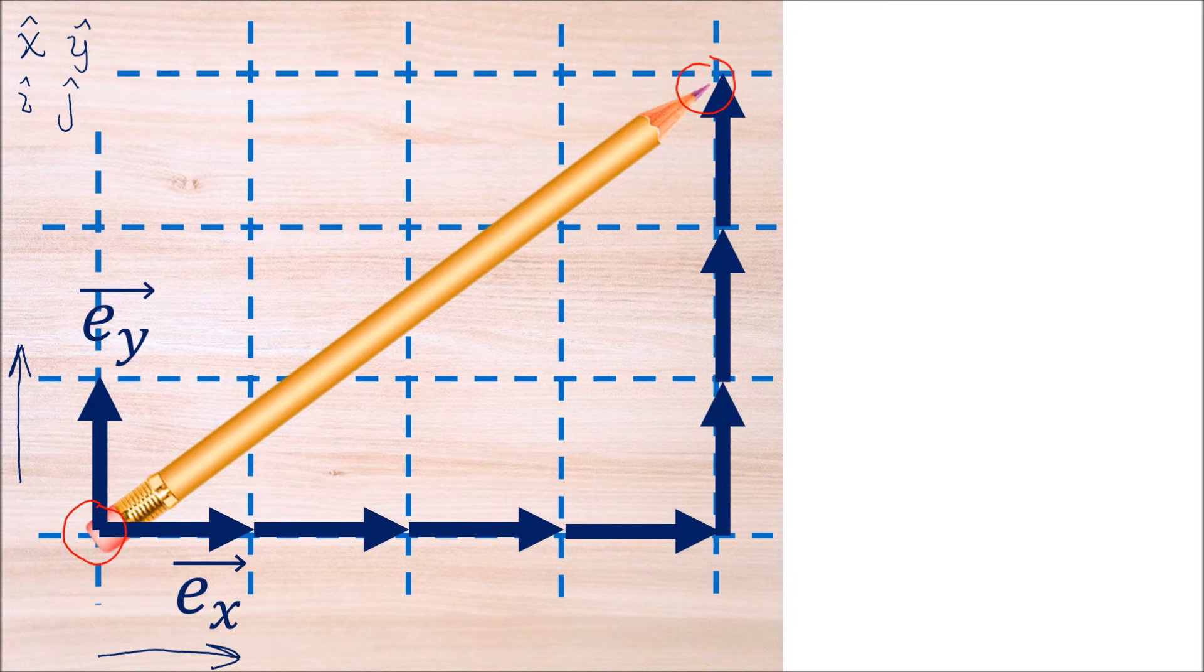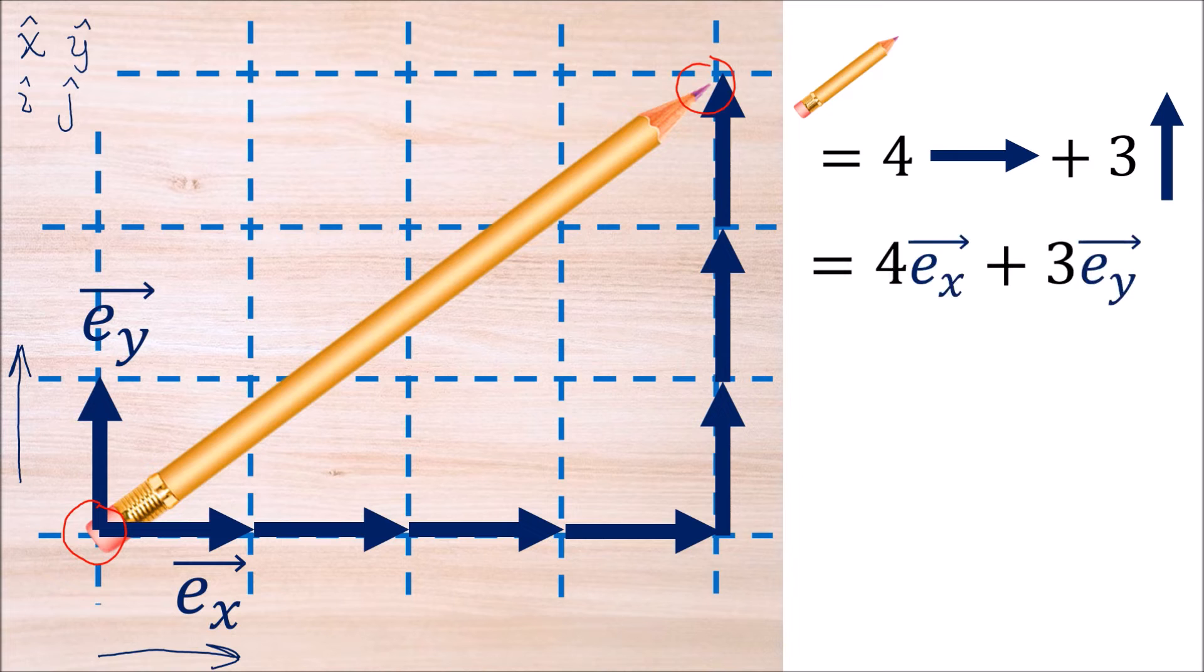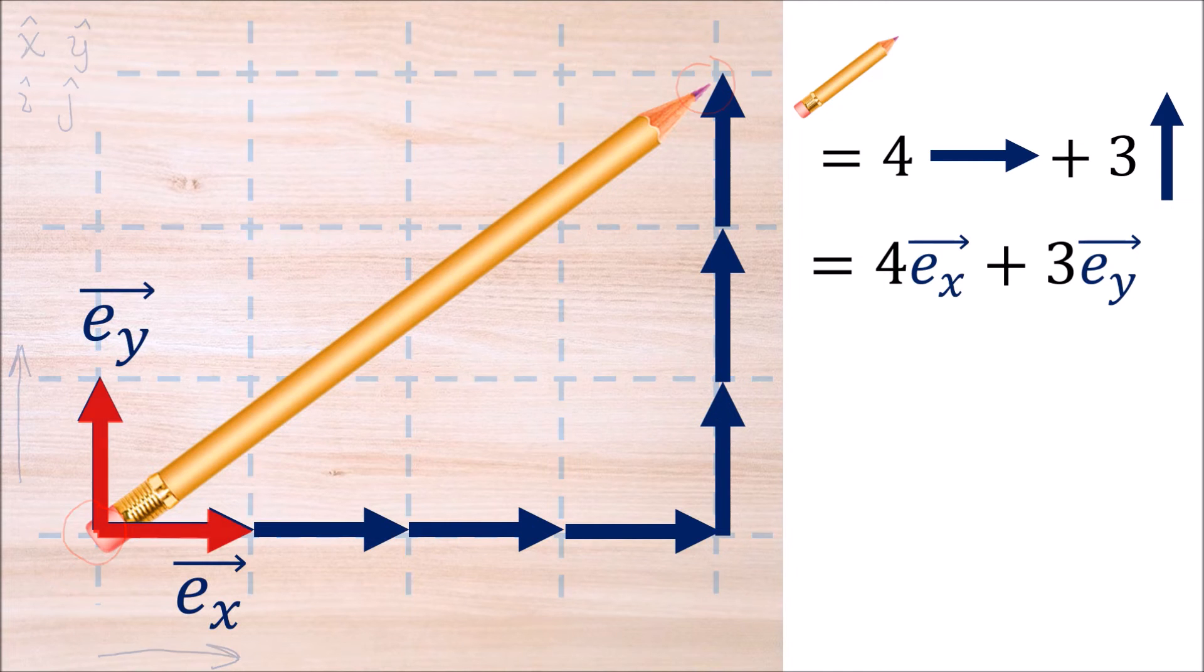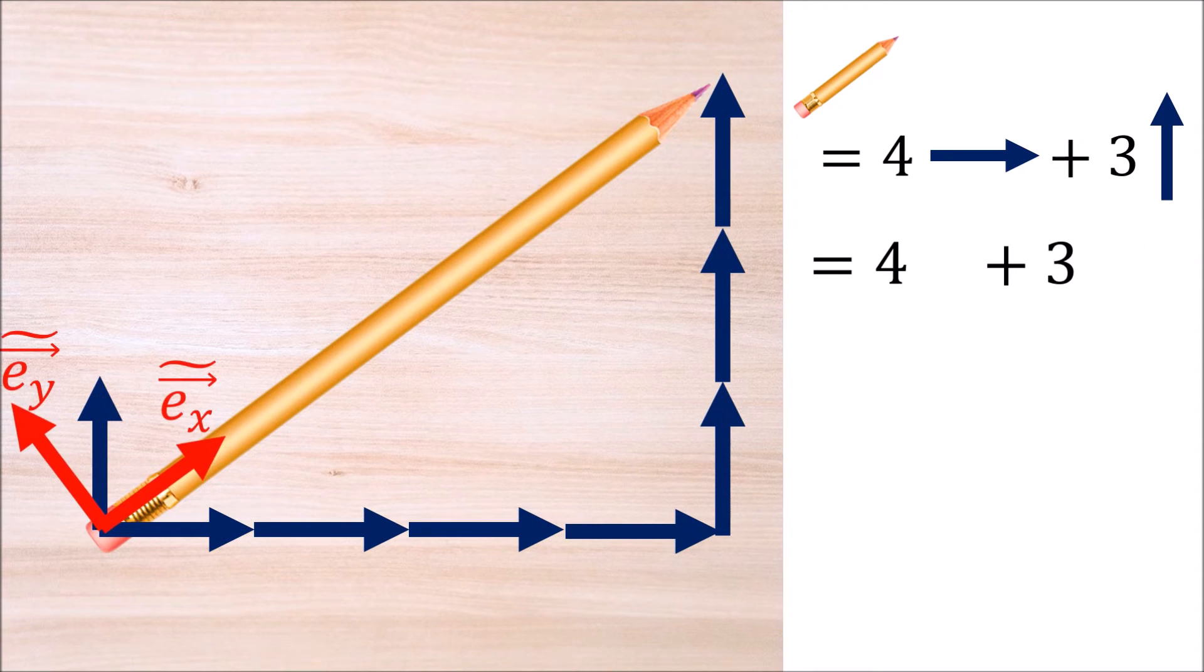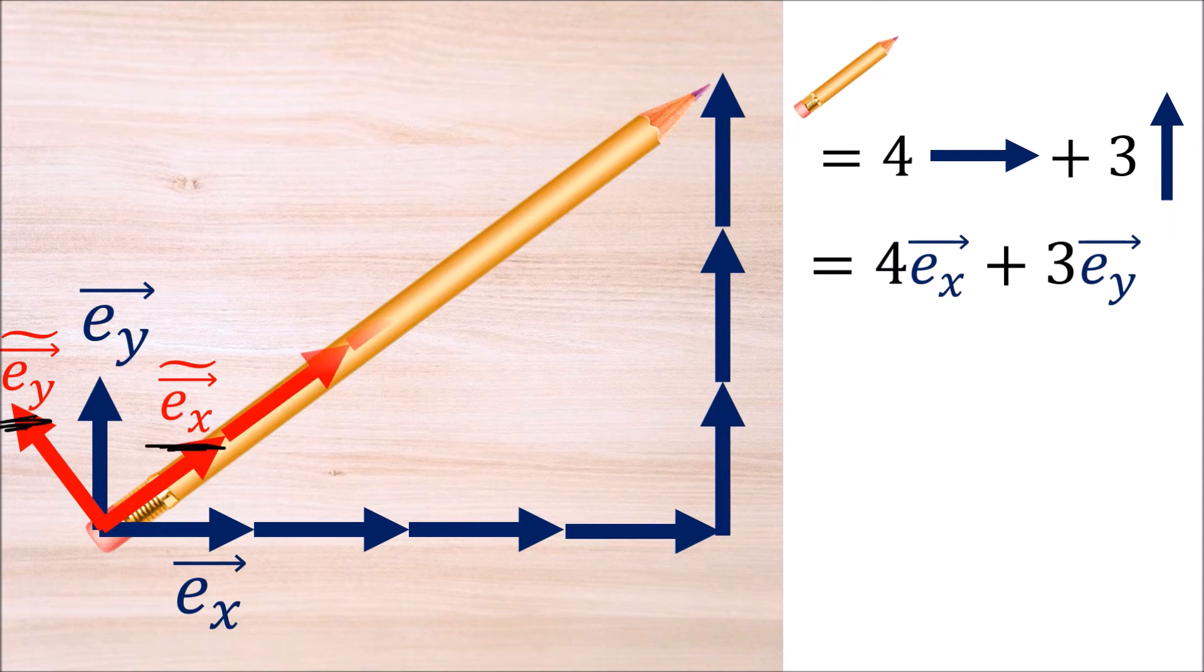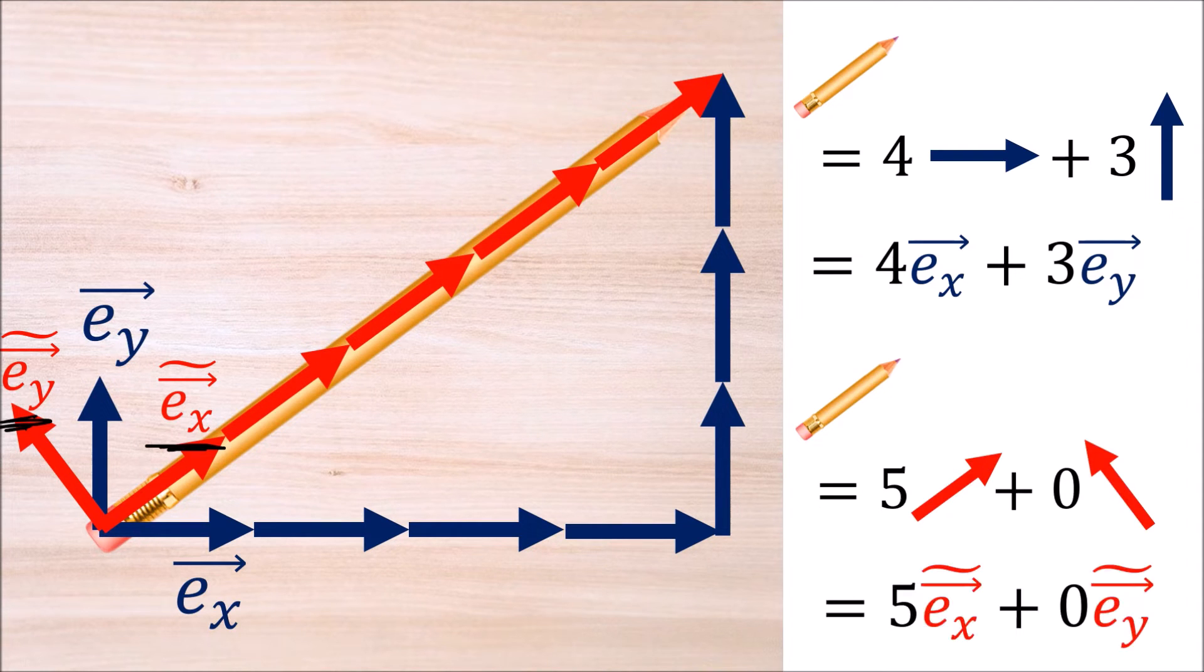In this case, the separation between the pencil's eraser and tip is given by four horizontal vectors and three vertical vectors. Writing this in math notation, we get 4 EX plus 3 EY. But we can also measure this pencil using a different set of basis vectors. For example, a pair of basis vectors that are rotated by some angle. We'll call these new rotated basis vectors EX tilde and EY tilde. And using these basis vectors to describe the pencil, we find the pencil is equal to 5 EX tilde basis vectors and 0 EY tilde basis vectors.